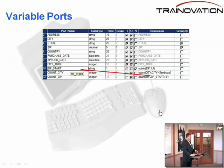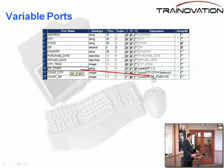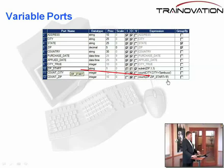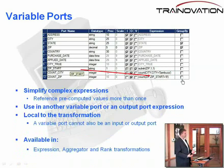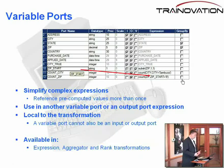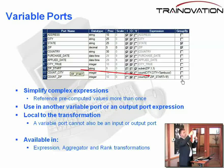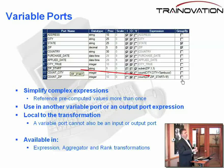Here's an example of a variable port in an aggregator where we're taking the zip code start and counting the zip codes that begin with the number nine. Some of the things we can do with aggregator variables, or any variable, is simplify complex expressions. We can build multiple variables and use them one after the other, using the previously assigned variable in the next variable definition — this is pretty nice for breaking up code while keeping it compact yet maintainable.